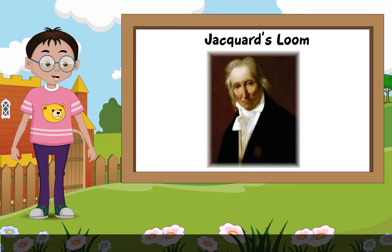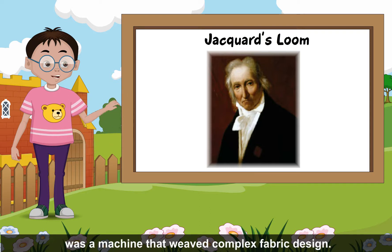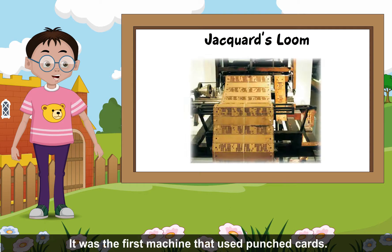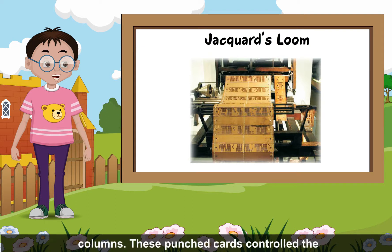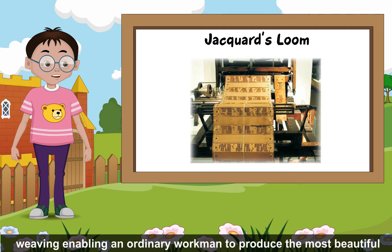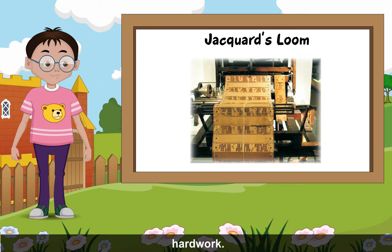Jacquard's Loom: J.N. Jacquard invented a powered loom in 1801. It was a machine that weaved complex fabric designs. It was the first machine that used punch cards. Each card contained the same number of rows and columns. These punch cards controlled the weaving, enabling an ordinary workman to produce the most beautiful patterns in a style previously accomplished only with patience, skill and hard work.